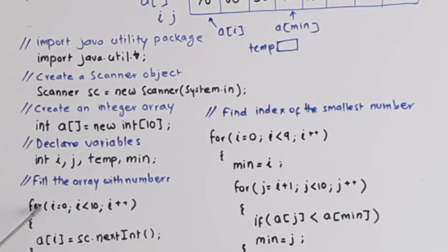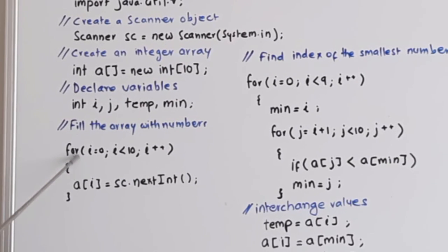Fill the array with numbers. For i is equal to 0, i is less than 10, i double plus. In the for loop you will also write an output statement prompting the user to enter a number. And we can accept the numbers using this statement a in bracket i equals to sc dot next int.